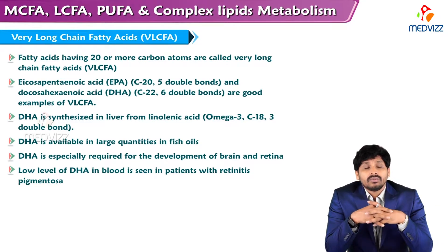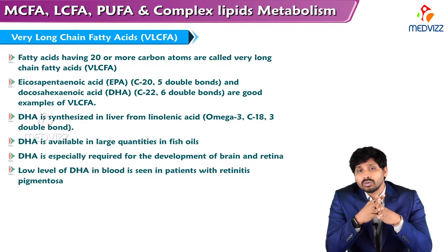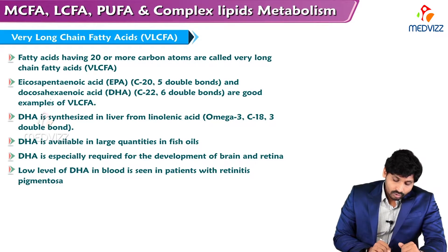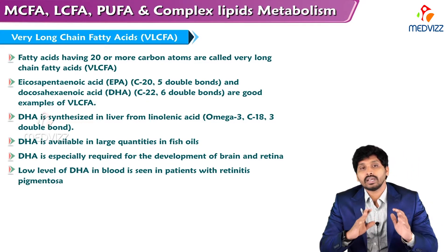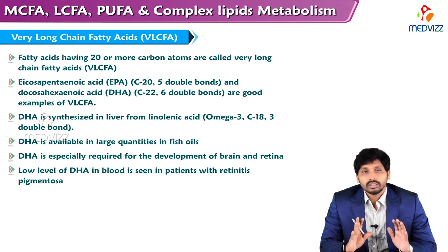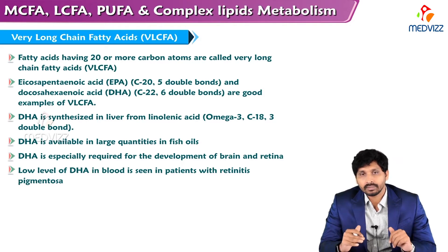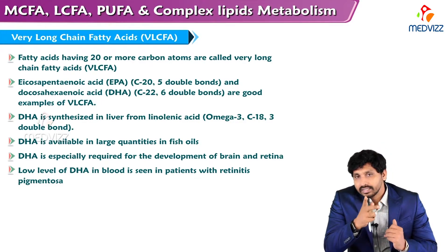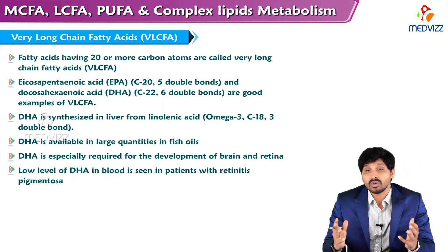Coming to very long chain fatty acids: fatty acids having 20 or more carbon atoms are called very long chain fatty acids. An example is eicosapentaenoic acid, which has five double bonds, and docosahexaenoic acid, which has six double bonds and a total of 22 carbons. Very long chain fatty acids are always unsaturated. DHA is synthesized in the liver from linolenic acid, an 18-carbon omega-3 fatty acid with three double bonds. Docosahexaenoic acid is available in large quantities in fish oils — that's why fish oils are considered good.